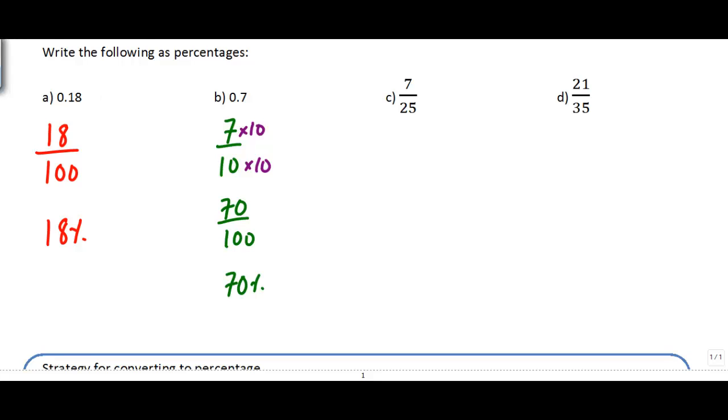If we start with a fraction already, I've got 7 over 25 here. You can see that I'm not out of 100, but it's pretty easy to convert 25 into 100 by just multiplying by 4. I can do that with top and bottom, and I get 7 times 4 is 28 over 25 times 4 is 100. My answer here is 28 over 100. That's 28%.